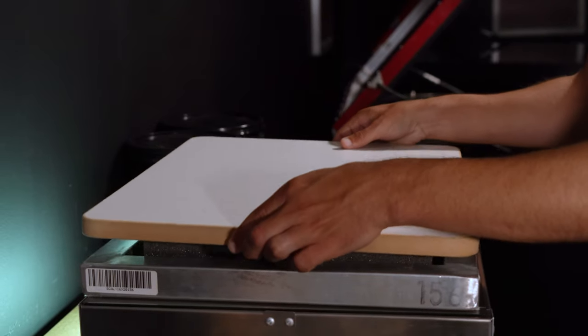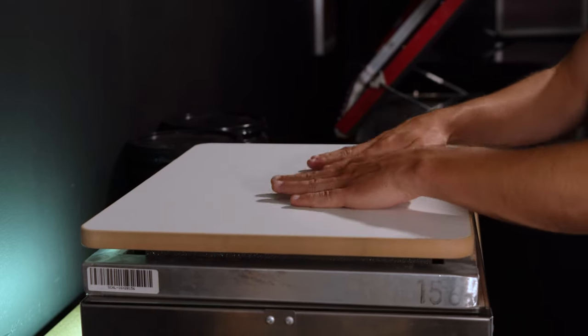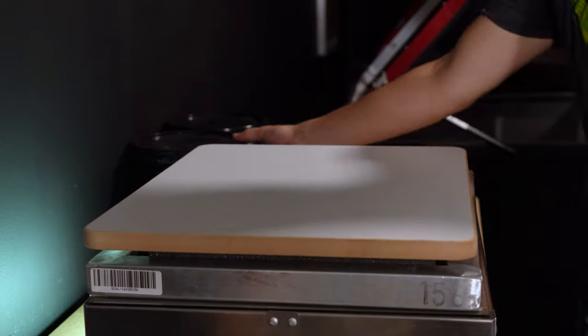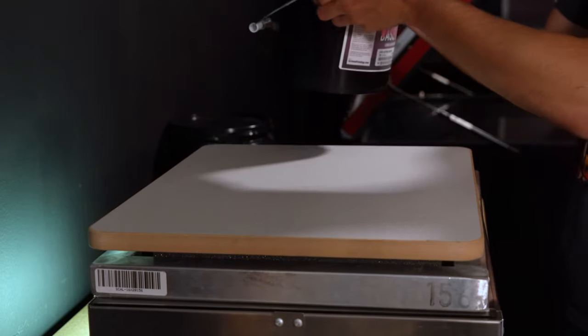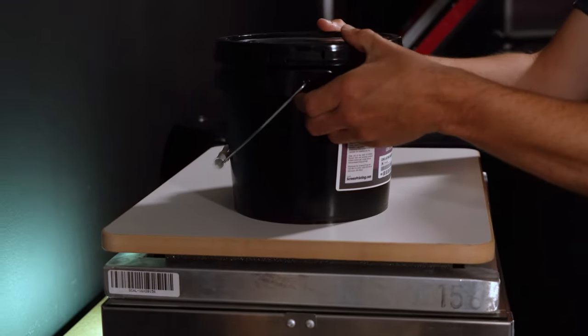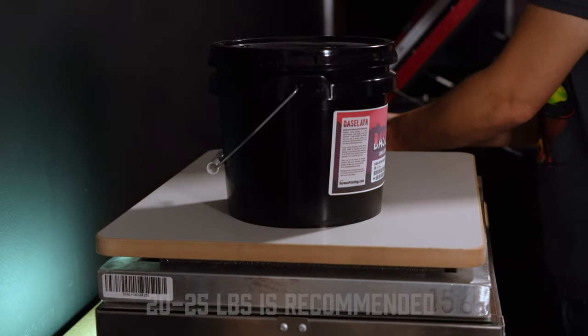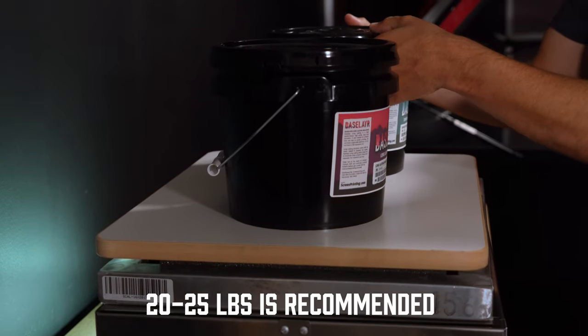Then, a piece of wood is placed on top of the foam to give a solid surface for the weight to sit. Place the weight on top of the wood. Make sure to use enough weight that we get good compression and positive contact, but not so much that you break the glass. Roughly 20 to 25 pounds.